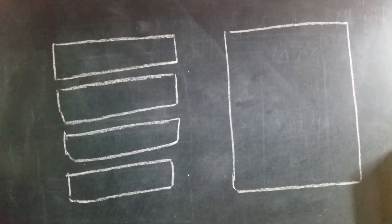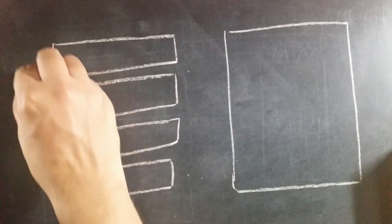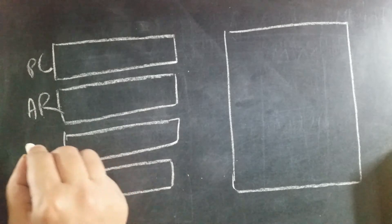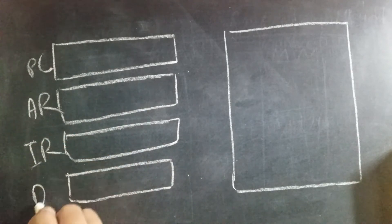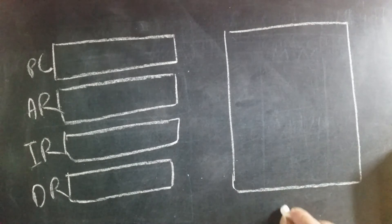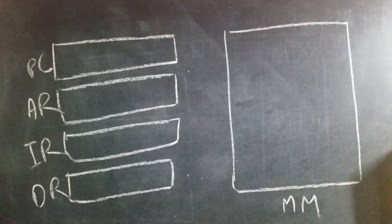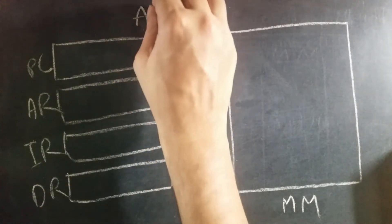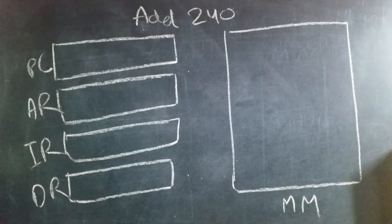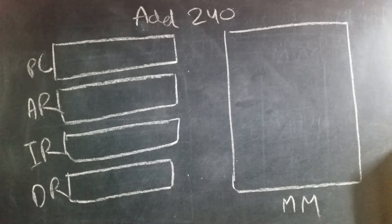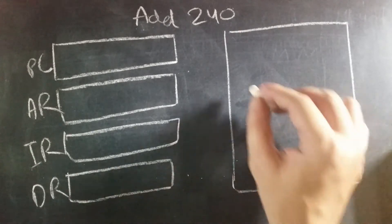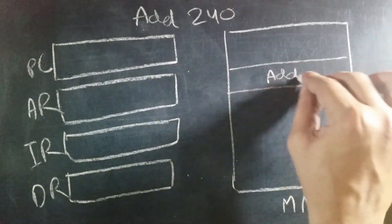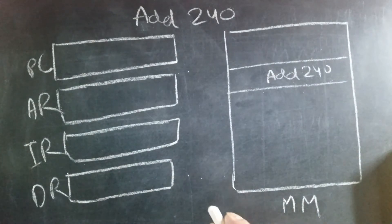The result will be stored in accumulator. Now I'll show you how this works with all the registers in an organized manner. Let's see what I explained through a diagram. Let's assume that there are these four registers: program counter, address register, instruction register, and data register. Along with that we also have main memory. Since the instruction that we needed to execute was ADD 240, first the program counter will send the address of the instruction to address register.